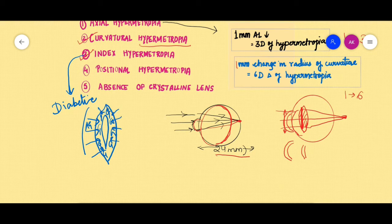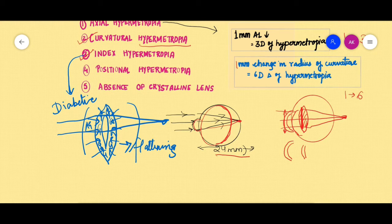So whenever the cortex is gaining more amount of hydration, that gives an effect similar to that of the flattening of the lens. Therefore the power of the lens will decrease and the patient will manifest something similar to hypermetropia. And because they develop it later after getting the cataract,